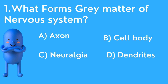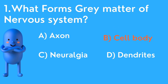Options are: A) Axon, B) Cell body, C) Neuroglia, D) Dendrites. The brain contains both grey matter and white matter. The answer is cell body — grey matter is formed of cell bodies. White matter, on the other hand, is formed of nerve fibers.